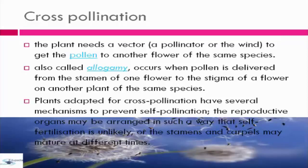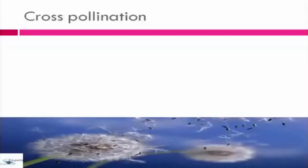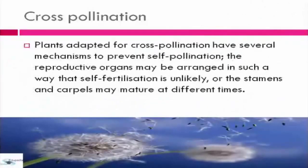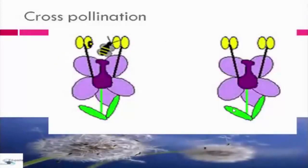The reproductive organs may be arranged in such a way that self-fertilization is unlikely, or the stamens and carpels may mature at different times. As you can see in the image, we have here the cross-pollination.